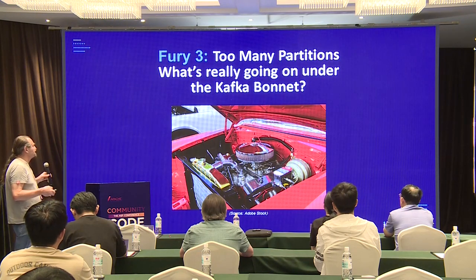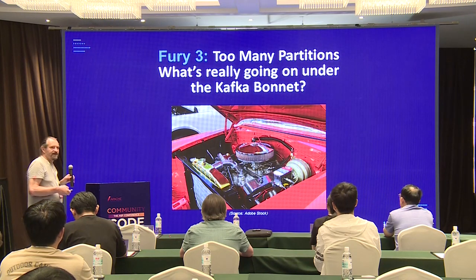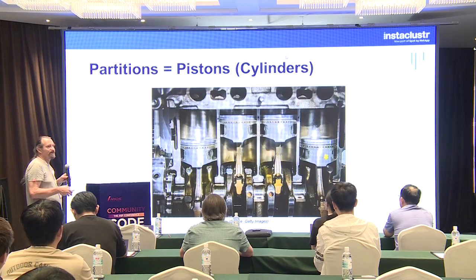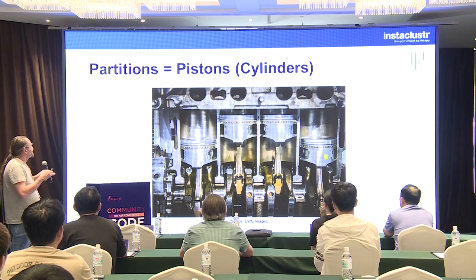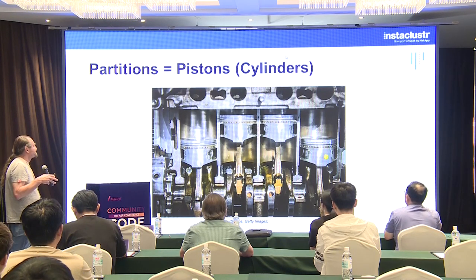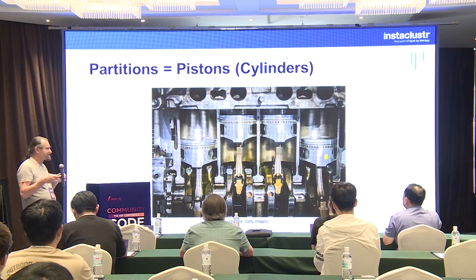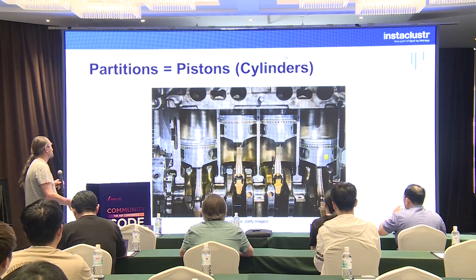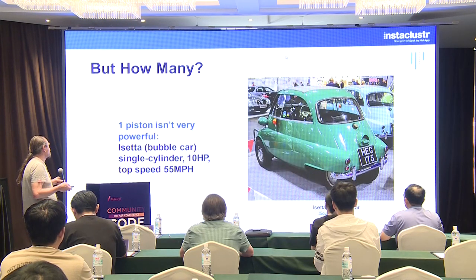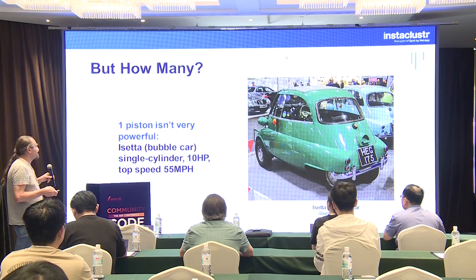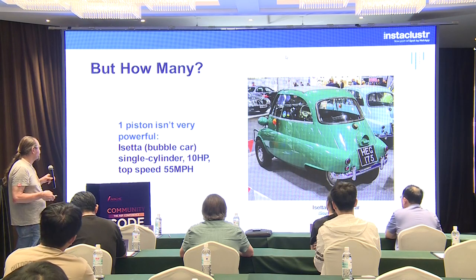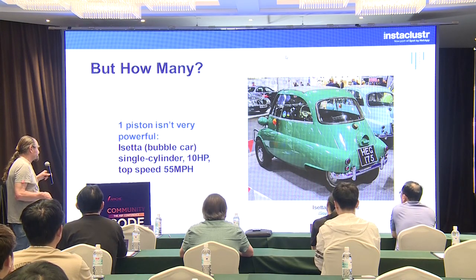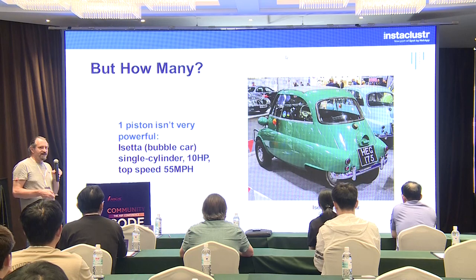The third fury is too many partitions. What's really going on under the Kafka bonnet? The more partitions you have are similar to car pistons or cylinders — in a traditional petrol engine, more cylinders give you extra horsepower. But how many partitions is too many? There's a one-piston car called the bubble car: single cylinder, 10 horsepower, top speed of 55 miles an hour. On the other hand, 16 pistons gives a lot of power — the Cadillac V16 had 175 horsepower and a top speed of 100 miles an hour.